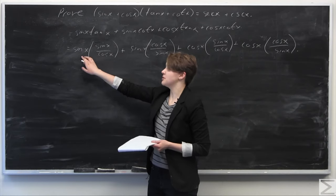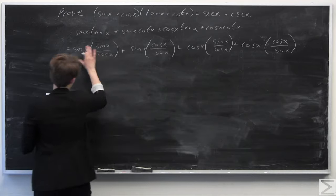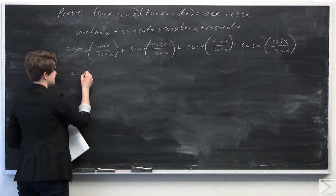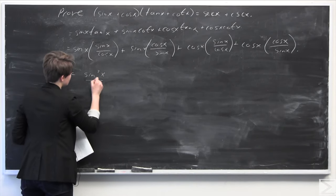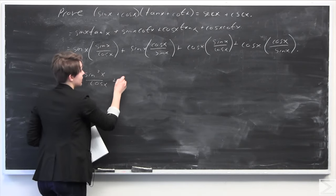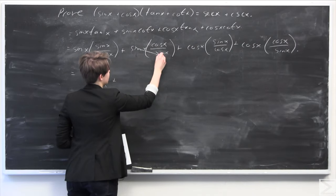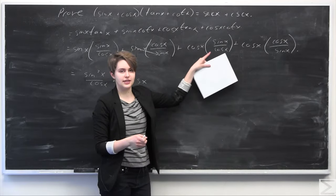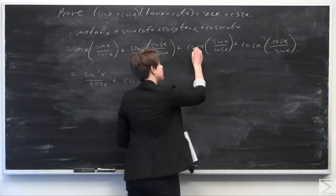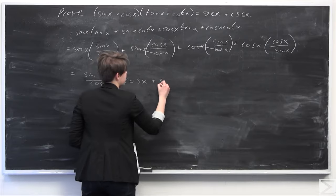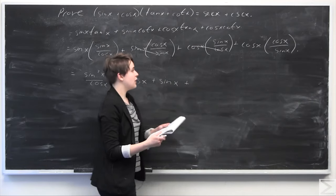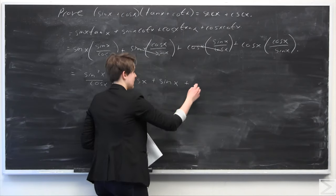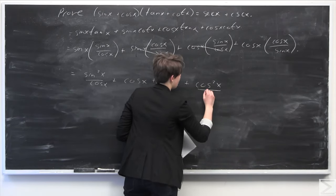Now I'm going to distribute the terms on the outside to combine these into one fraction. Sine of x times sine of x gives sine squared of x over cosine of x. For the next term, sine of x in the numerator and sine of x in the denominator cancel out, leaving just cosine of x. Similarly, cosine of x cancels in the following term leaving just sine of x, and cosine of x times cosine of x gives cosine squared of x over sine of x.